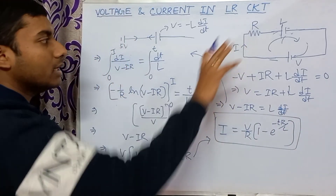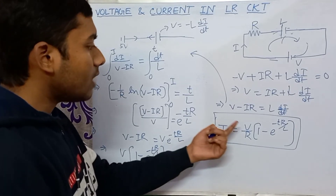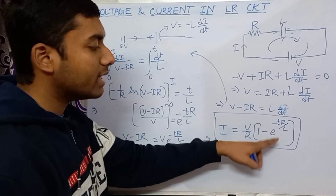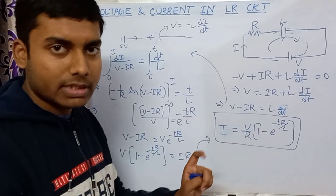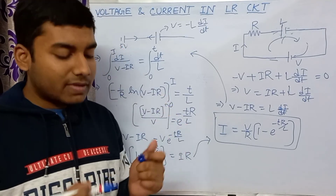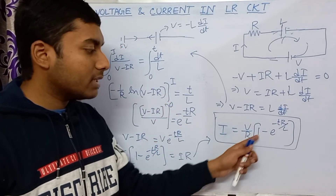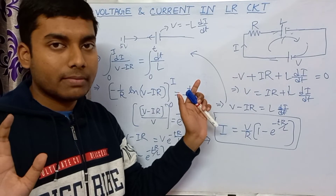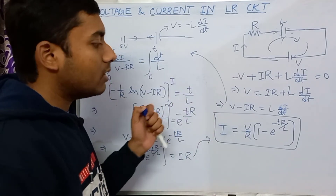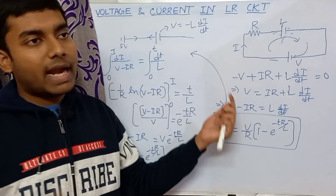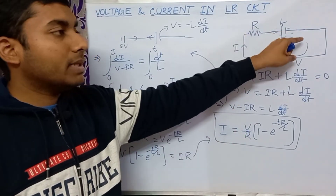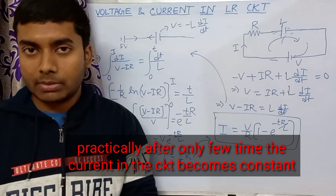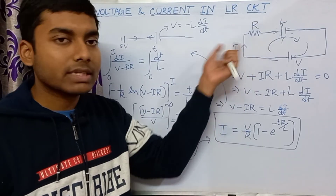This is the current expression in the circuit of an LR circuit: I = (V/R)(1 − e^(−tR/L)). At t equals 0, the exponential term is 1, so current is 0 — that is the actual initial case. At t equals infinity, the exponential term goes to 0, so I equals V by R. That means at steady state the inductor acts as if it is not there, and only the normal resistance of the circuit remains — the inductance can be effectively removed.